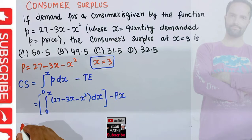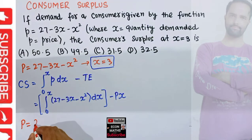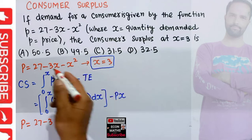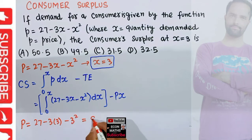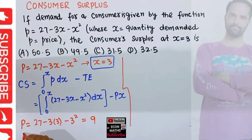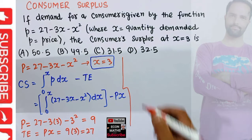First we need to find the value of P. We plug the value of X, which is 3, into the inverse demand function: P equals 27 minus 3(3) minus 3 squared, which comes out to be 9. Then total expenditure equals price into quantity, which is 9 times 3, equal to 27.